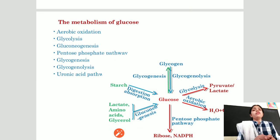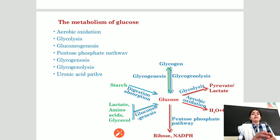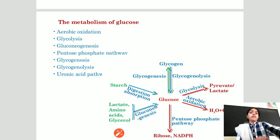Glucose is involved in various metabolic processes, including aerobic oxidation, glycolysis, gluconeogenesis, pentose phosphate pathway, and uronic acid pathway.